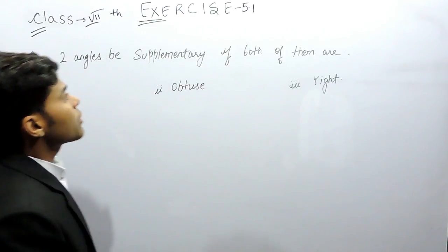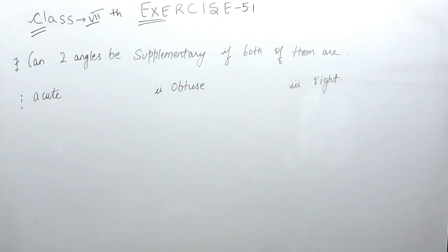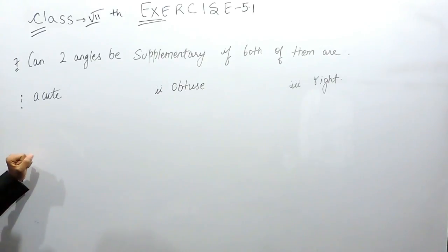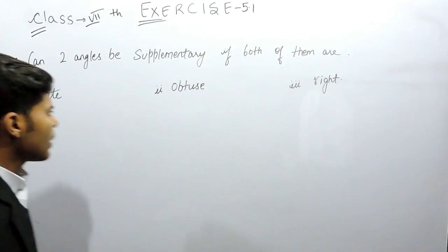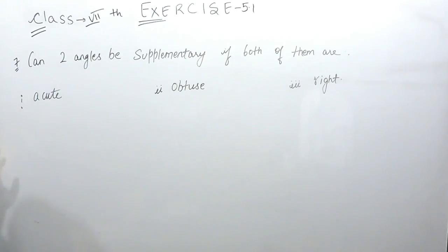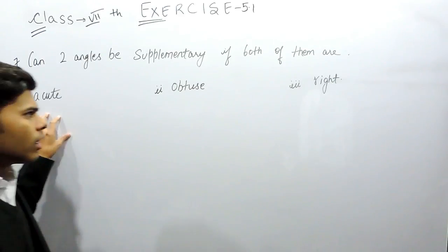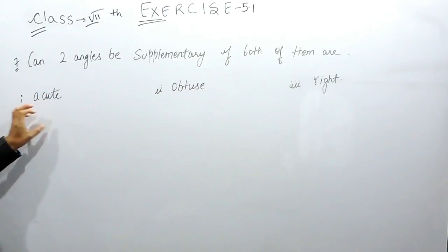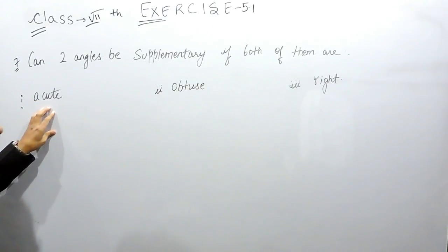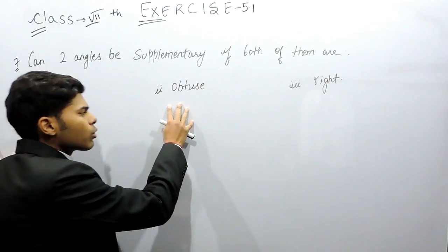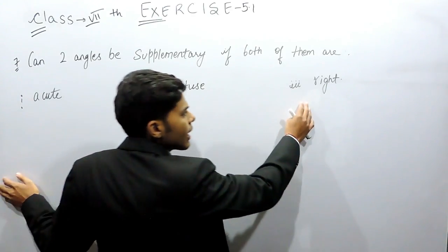This is the seventh question of Exercise 5.1. The question asks us to check whether any two angles can be supplementary if both of them are: first, acute; second, obtuse; and third, right. To solve this, you should know that acute angles are less than 90 degrees, obtuse angles are greater than 90 degrees, and right angles are equal to 90 degrees.